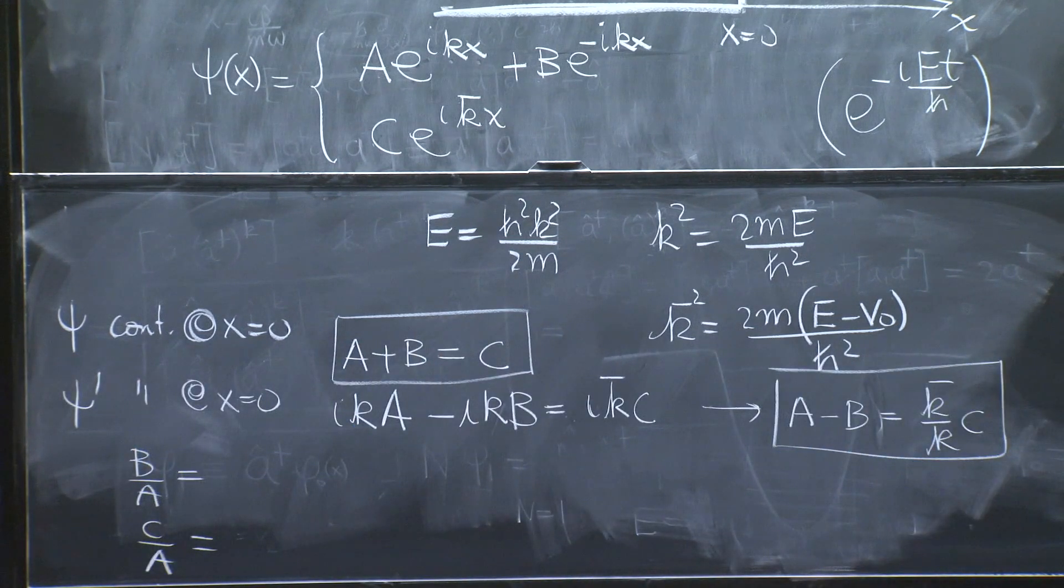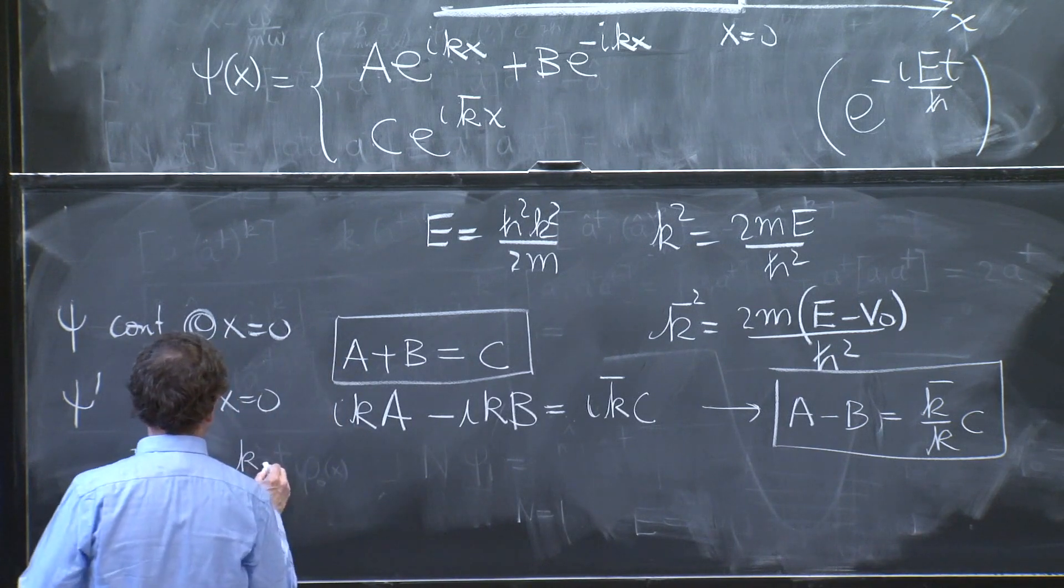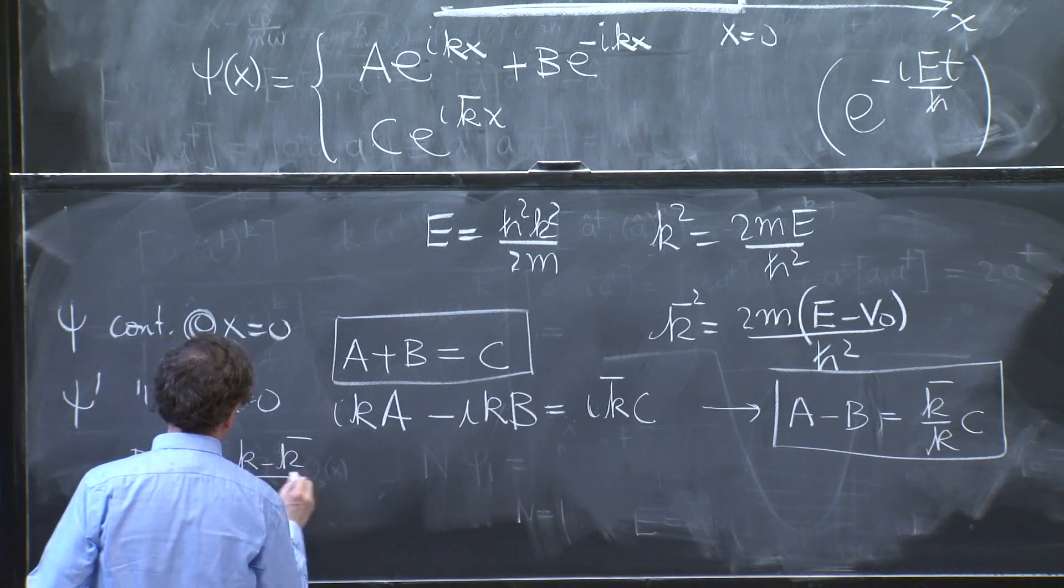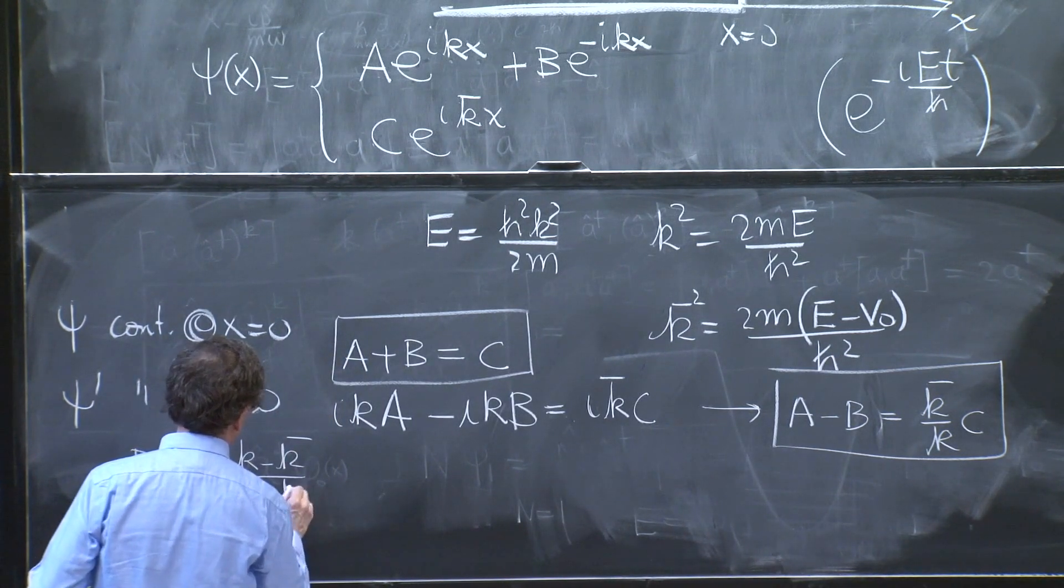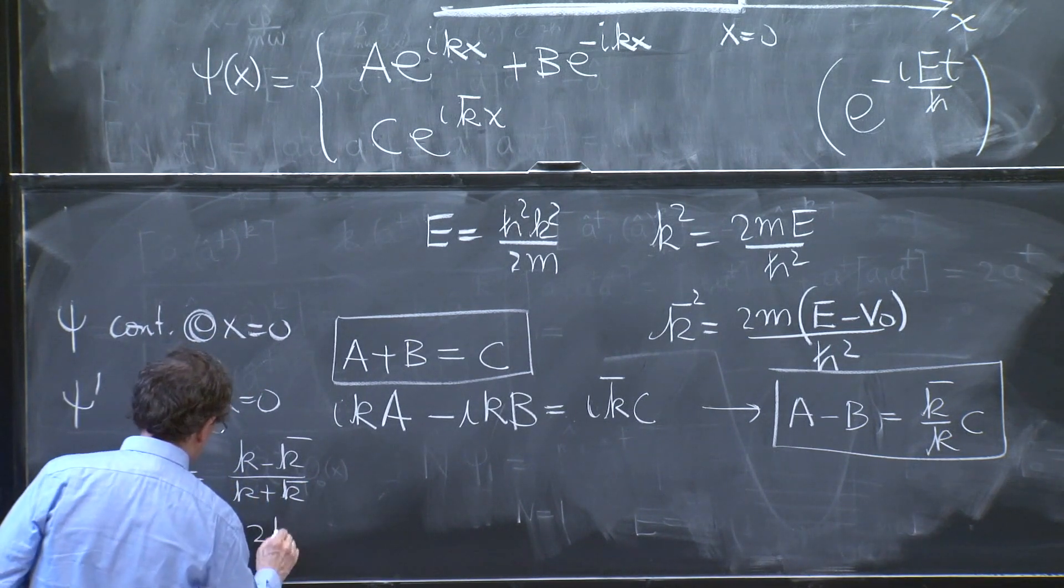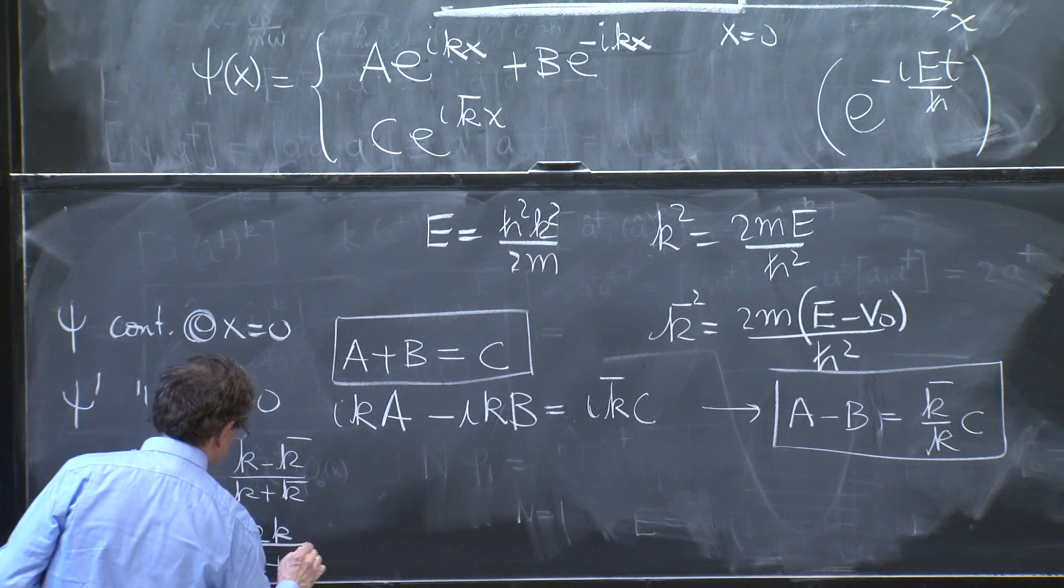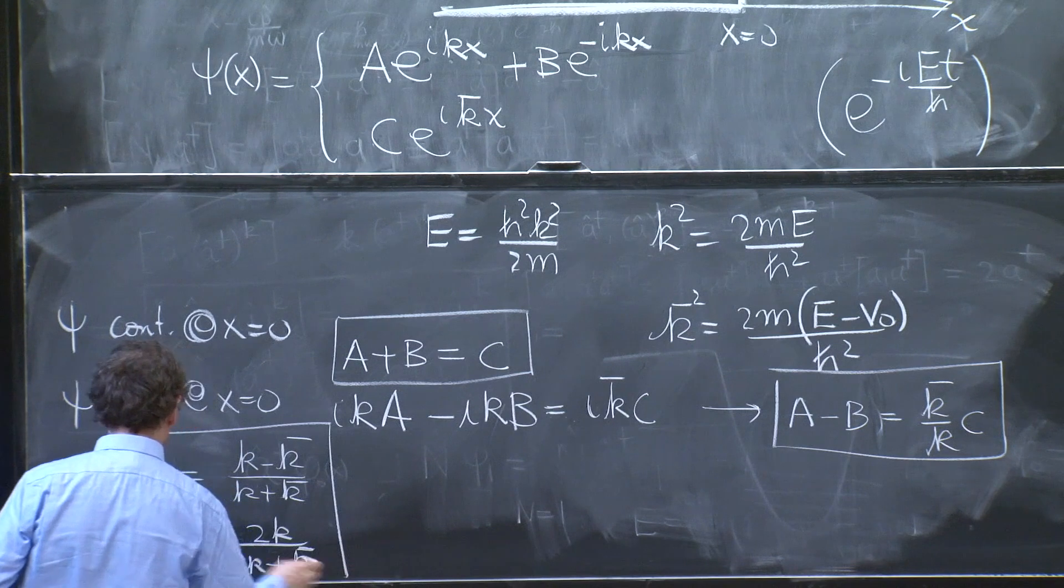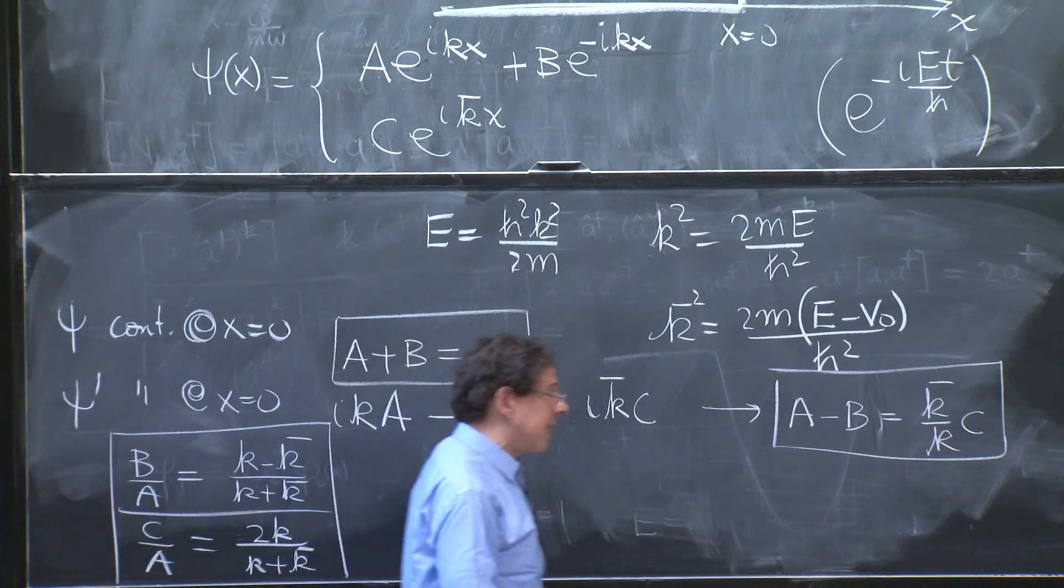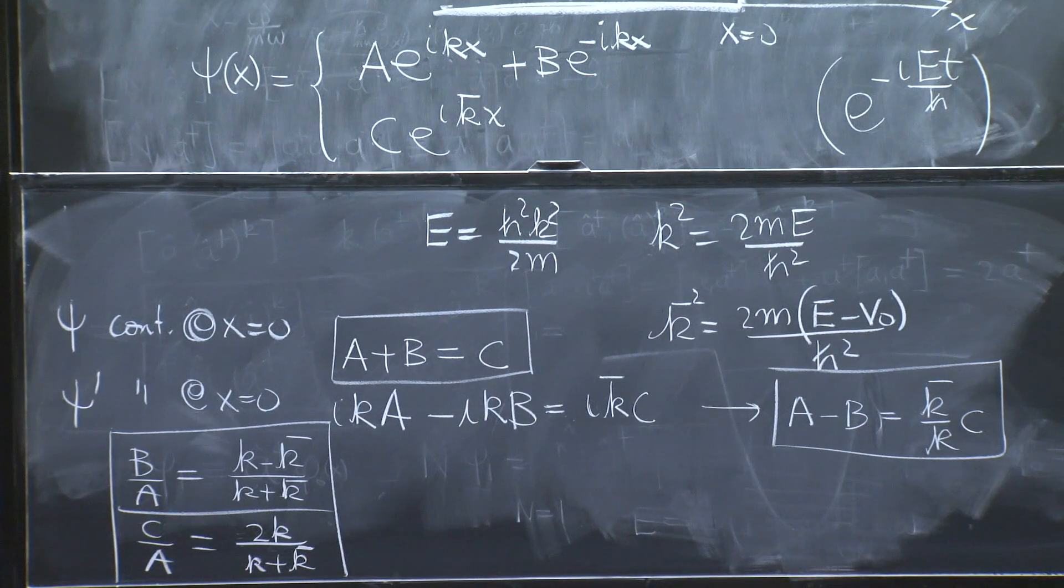And these two equations, it's a one line computation. I'll write the answer. b over a is k minus k bar over k plus k bar. And c over a is 2k over k plus k bar. b gives you a sense of how much is reflected. c, how much is transmitted.